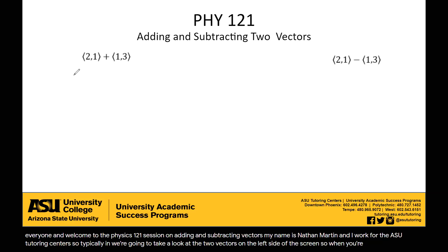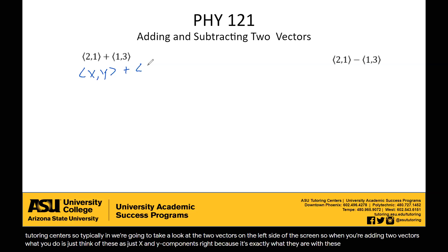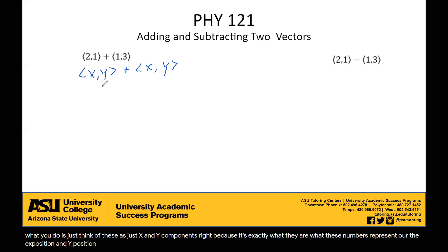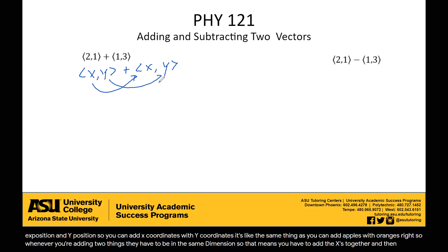When you're adding two vectors, just think of these as X and Y components, because that's exactly what they are. These numbers represent the X position and Y position. You can't add X coordinates with Y coordinates — it's like you can't add apples with oranges. Whenever you're adding two things, they have to be in the same dimension, so you add the Xs together and the Ys together.